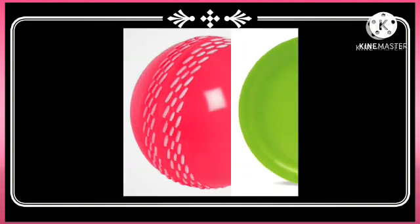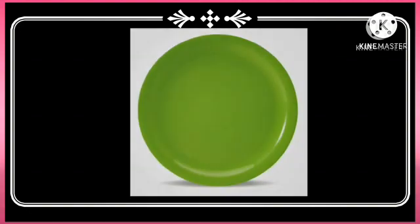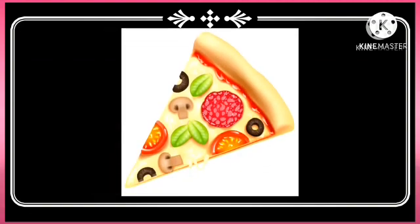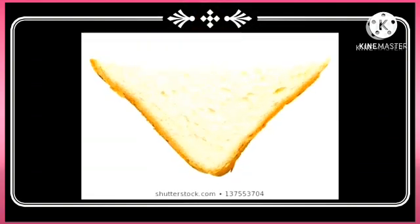Next shape is triangle and objects of triangle shape are pizza and another object is a piece of bread. If we cut the bread then it gets triangle shape.